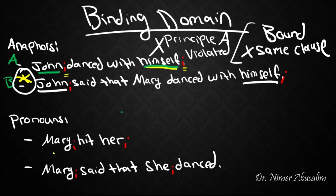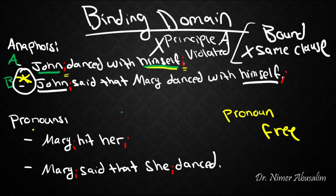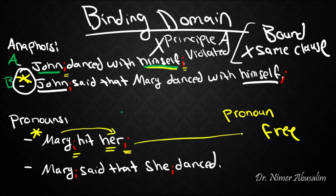Now let's see what was wrong with Principle B. Principle B states that a pronoun must be free. In 'Mary hit her,' they are coindexed and Mary c-commands 'her,' so 'her' is bound. But we want it to be free — that's why the sentence is ungrammatical.